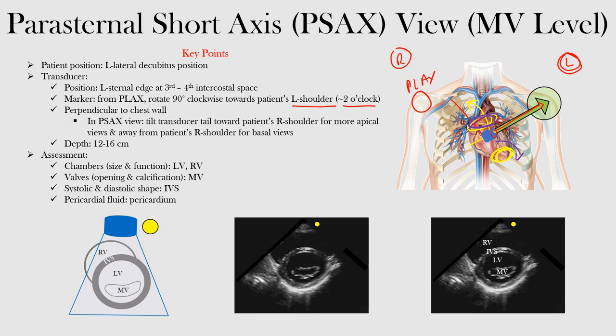In the parasternal short axis view, we have different levels. Once you have it at the left sternal edge, third or fourth intercostal space, we're rotating the marker from the parasternal long axis view 90 degrees clockwise towards the patient's left shoulder. We can tilt it either direction — towards the right shoulder for more apical views, or away for more basal views. The transducer is perpendicular to the chest wall, and depth is typically between 12 and 16 centimeters, adjustable based on the patient's habitus.